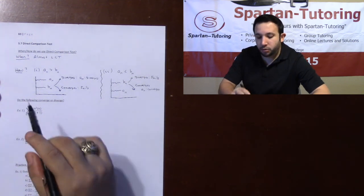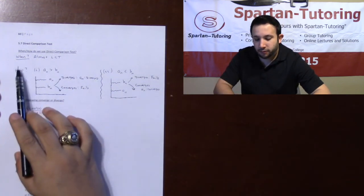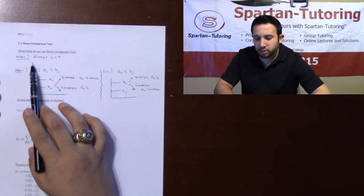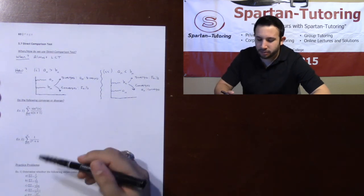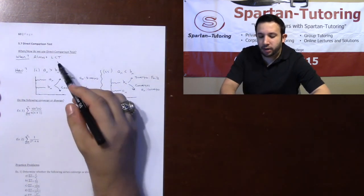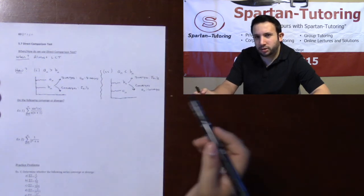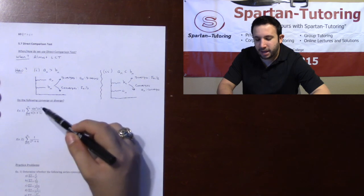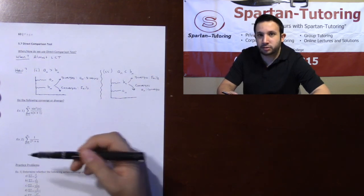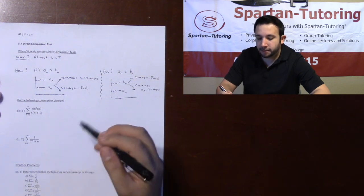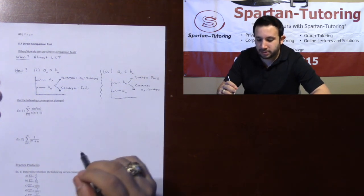Let's talk about when and how to do the direct comparison test. When you're going to do the direct comparison test is whenever it's almost a limit comparison — meaning that you have mostly polynomials, but you can't quite do limit comparison because a trig function or an exponential is kind of in the way. In this case, you need to directly compare this to a p-series.